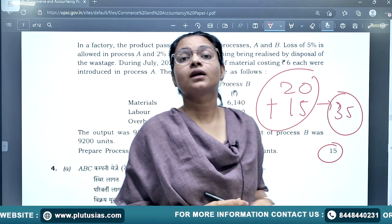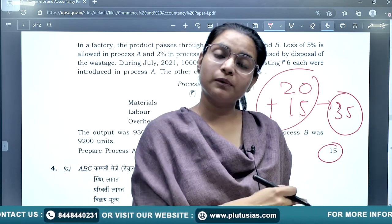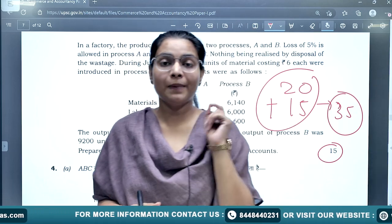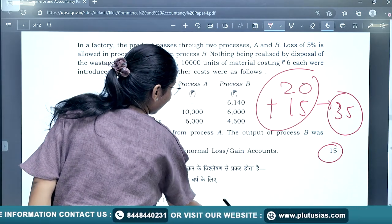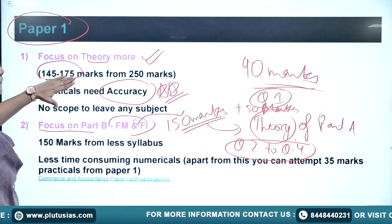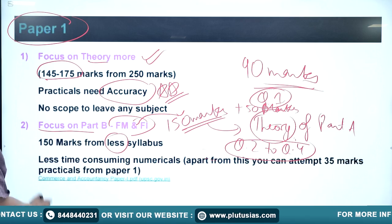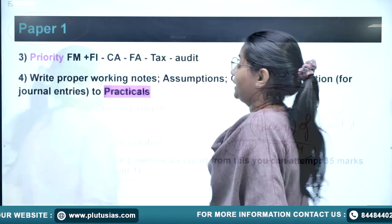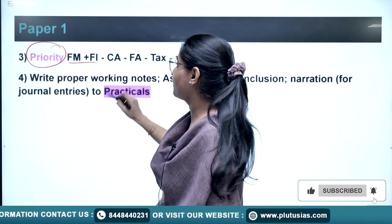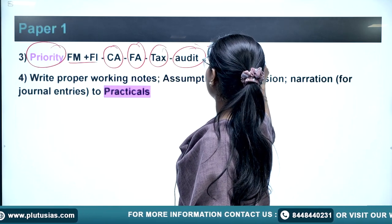Our strategy is: prepare FM and FI first, then prepare the theory of Part A to attempt the compulsory first question, then choose the question which includes fewer marks of numericals. We will focus more on theory because it covers 145 to 175 marks. For Part B, FM and FI require less effort and yield 150 marks. In subject priority after FM/FI: cost accounting, then financial accounting, then taxation, then audit — focusing more on theory in each.